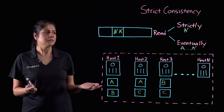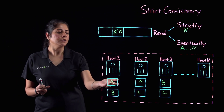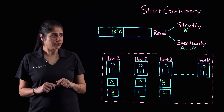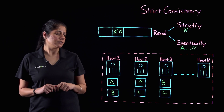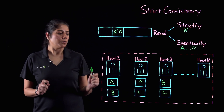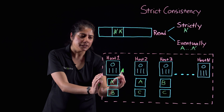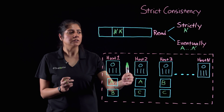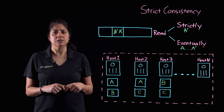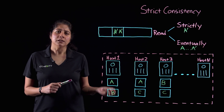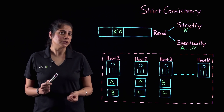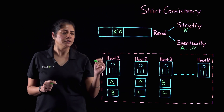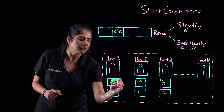A decision that a storage system has to make is how to handle updates to the replicas of the same data segment, and how to handle reads. In a strictly consistent storage system, there is always overlap between the subset of replicas updated as part of the write and the subset of replicas consulted on a read. That is how a strictly consistent system can always ensure that a read returns the value written by the most recent write.